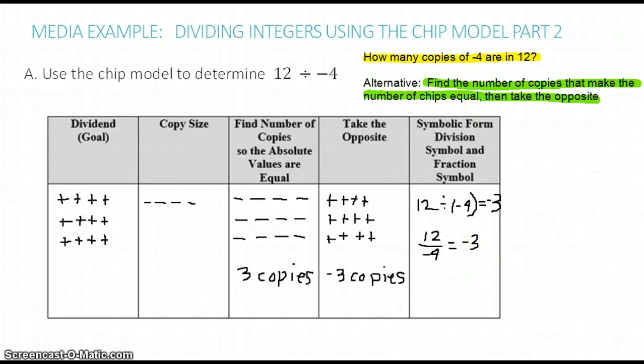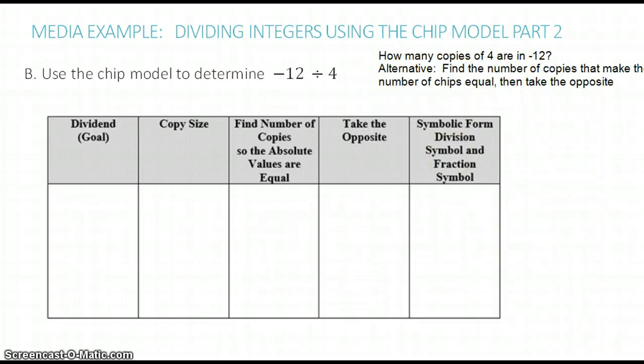Let's try the next one. So we have negative 12 divided by 4, or how many copies of 4 are in negative 12? So let's set this up. Now we have 12 negative CHIPs for our goal, but our copy size is 4 positive CHIPs.